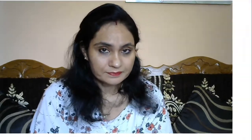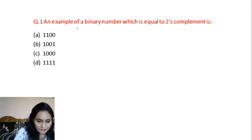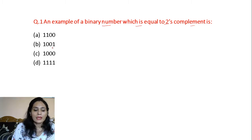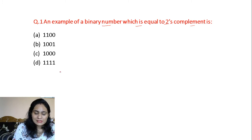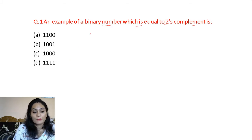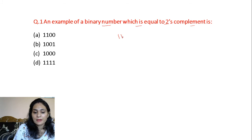Let's start with our first question. An example of a binary number which is equal to its 2's complement — you have to find out which is the original number. First of all, let's start with Option A. Option A is 1100.